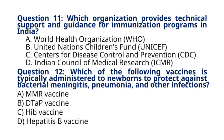Question 12. Which of the following vaccines is typically administered to newborns to protect against bacterial meningitis, pneumonia, and other infections? A. MMR vaccine. B. DTaP vaccine. C. Hib vaccine. D. Hepatitis B vaccine. The correct answer to question 12 is option C, Hib vaccine. The Hib vaccine protects against Haemophilus influenzae type B, a bacterium that can cause serious infections in young children, including meningitis and pneumonia.